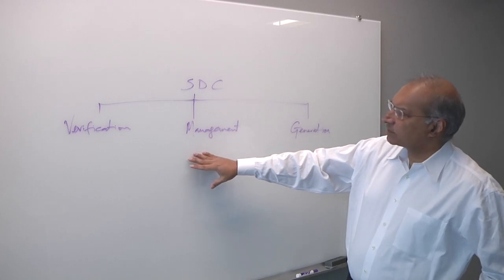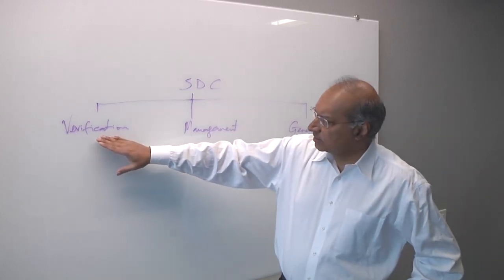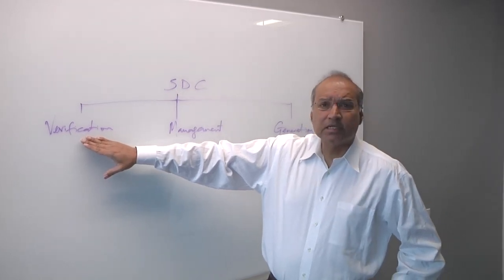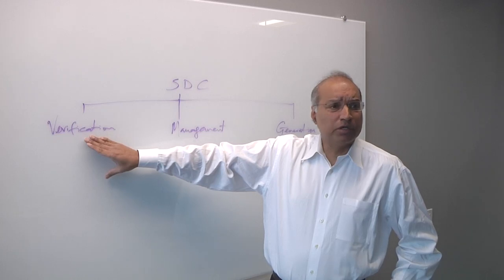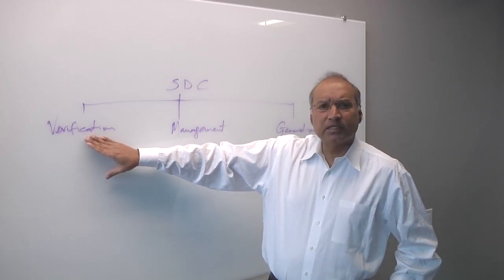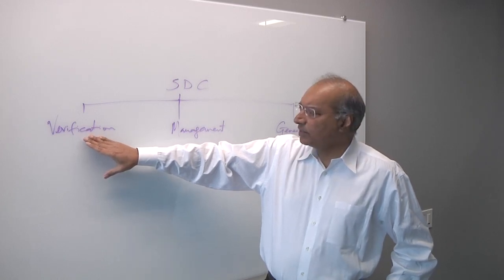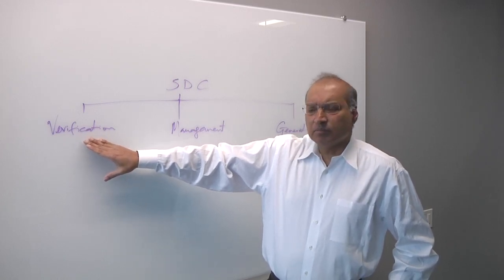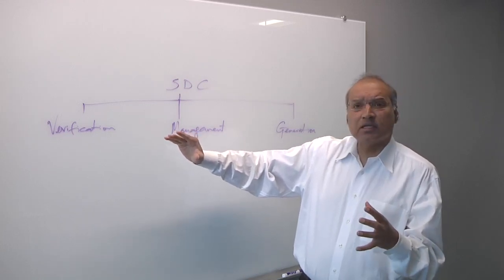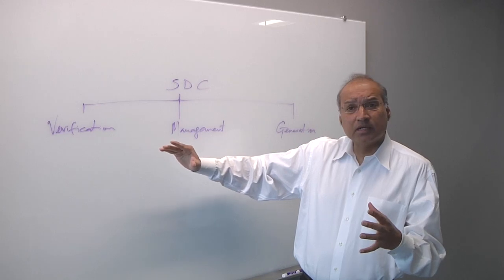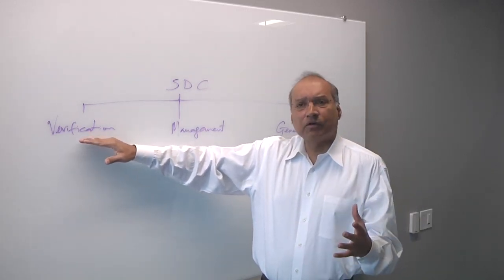So these are the different aspects to getting your SDC right. The first aspect is an engineer writes the SDC and they're looking for feedback from us on is their SDC any good? Is it correct? Is it complete? So that's the verification aspect. And this needs to happen very early because really what we're trying to do over here is make sure the SDC is in sync with the functionality of the design.